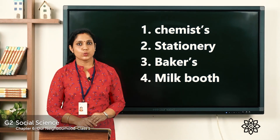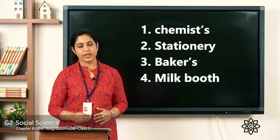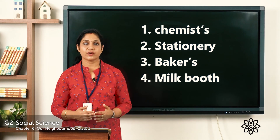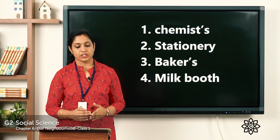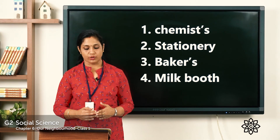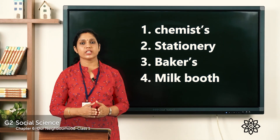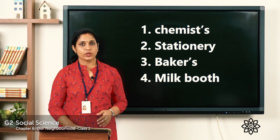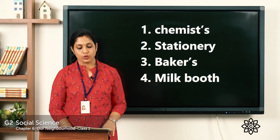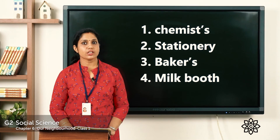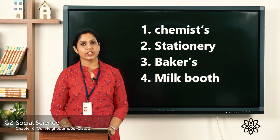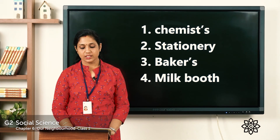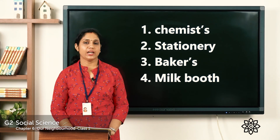Now let's check the answers. Question 1: You get medicines from a chemist's shop. Question 2: Sarah must go to the stationery shop — that is where we get writing materials like books, pens, and pencils. Question 3: It is the baker's shop where she can buy a birthday cake. Question 4: Sarah's father must get milk from the milk booth.